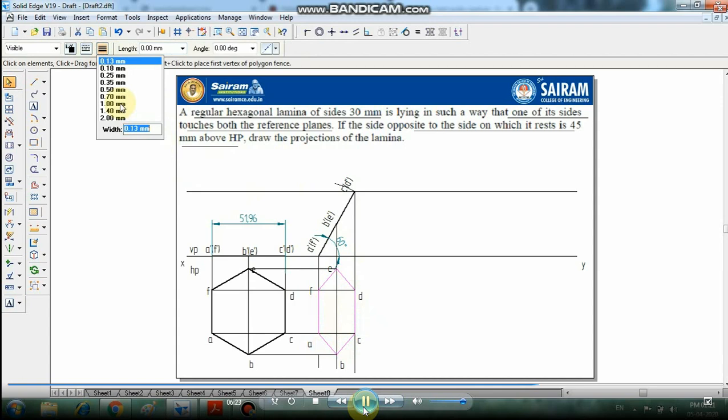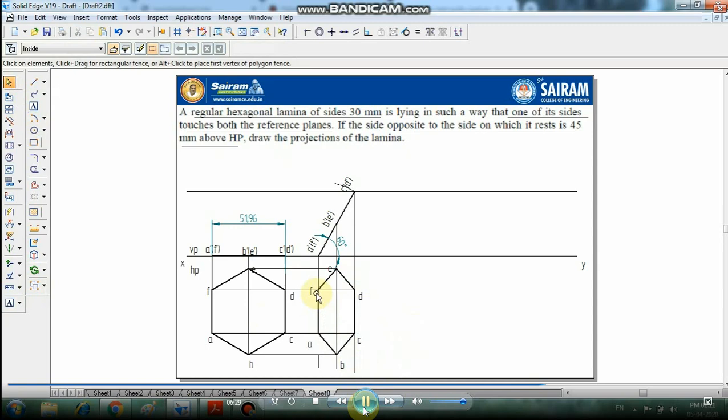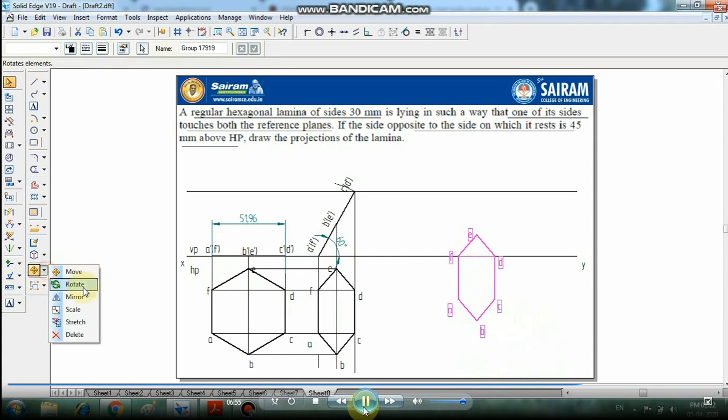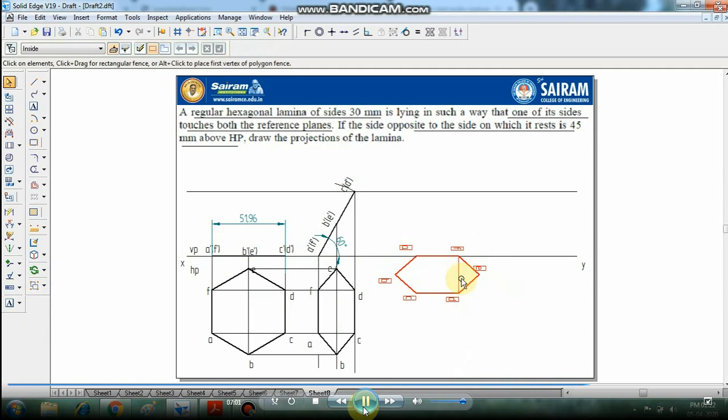This is the top view after the inclination. Now we have to move this as the problem says, that one of its sides touches both the reference planes, VP and HP. First, we have to keep a copy, move a copy here, select this. In that side edge, that is the FA edge, I am going to keep it on the reference line.